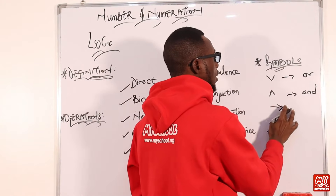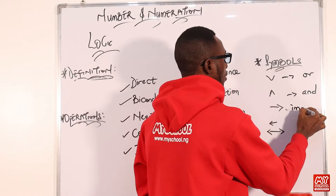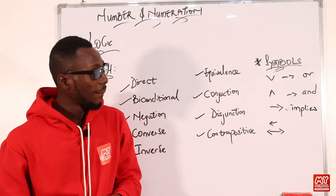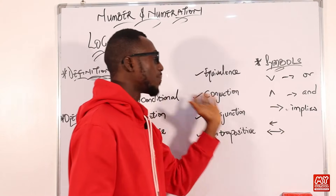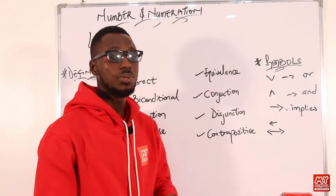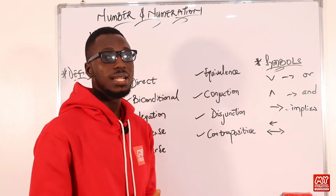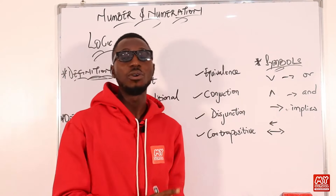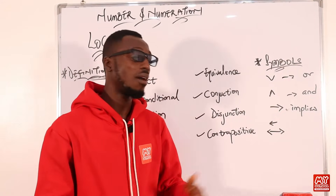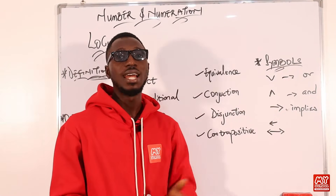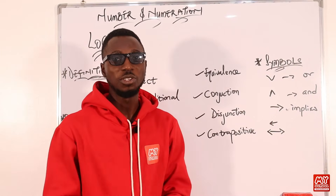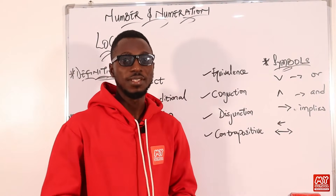We also have the implies symbol — A implies B. And this can also represent implied by. This symbol can represent a biconditional statement or a biconditional implication, or some presentations will give you that it stands for an equivalent expression, also called an equivalent statement.